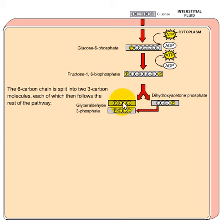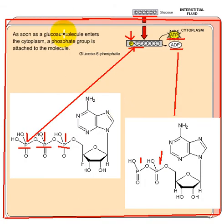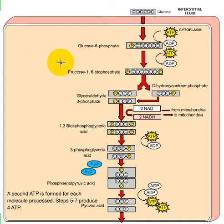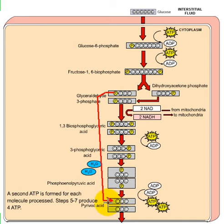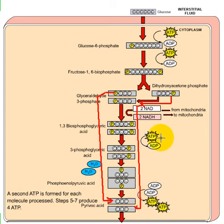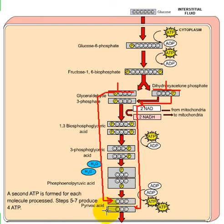This six-carbon molecule is then split into two three-carbon molecules. Each of these three-carbon molecules will go on to become pyruvic acid. One three-carbon molecule goes through the steps and becomes pyruvic acid, and the other three-carbon molecule also goes through steps and eventually becomes pyruvic acid. So this six-carbon molecule becomes two three-carbon molecules, each producing pyruvic acid — giving us two pyruvic acid molecules in total.